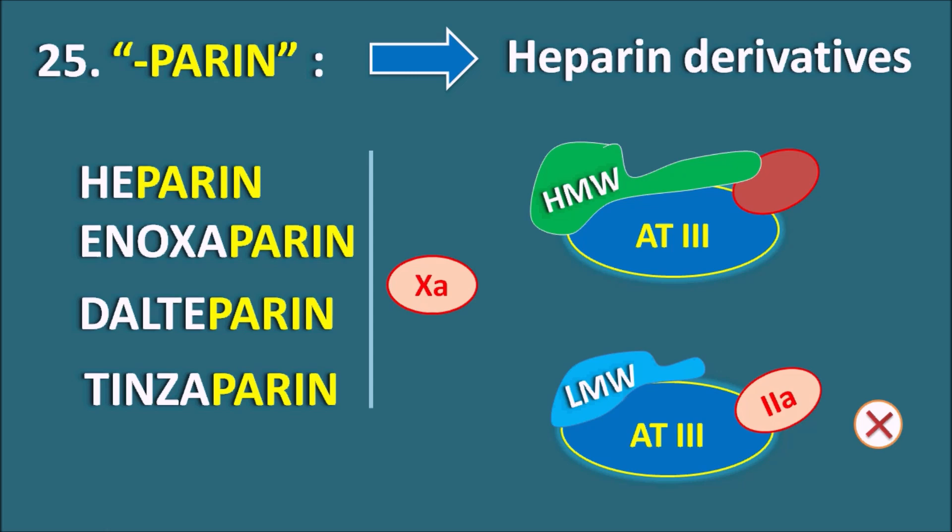Heparin derivatives are mainly used as IV anticoagulants, and one important side effect is hemorrhage. In order to prevent hemorrhage, protamine sulfate can be used as an antidote for heparin.